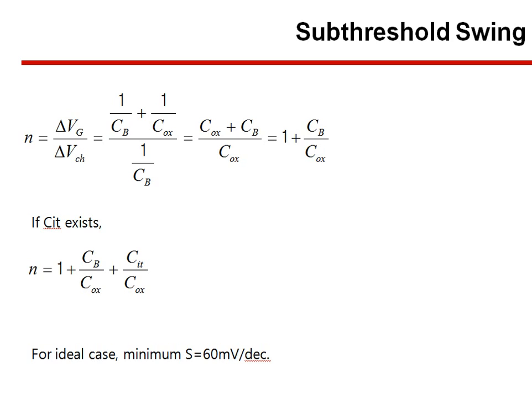When the threshold voltage value is greater than zero with a forward bias, this is enhancement mode. Conversely, when the threshold level is negative, this is depletion mode.